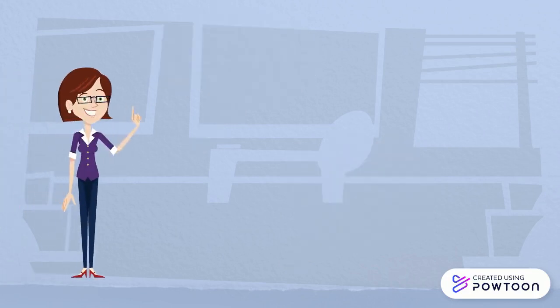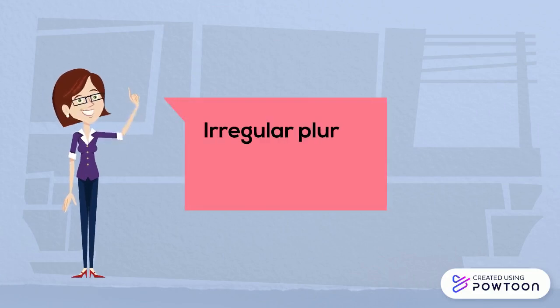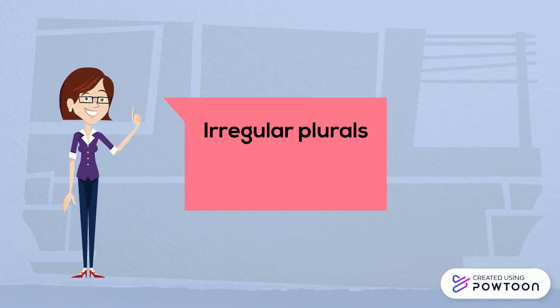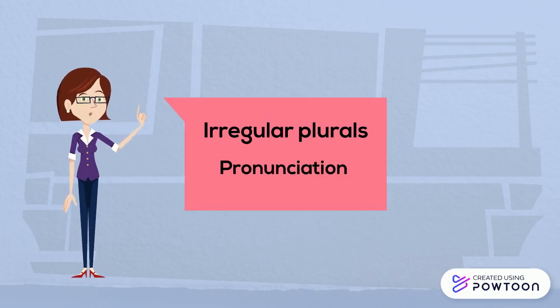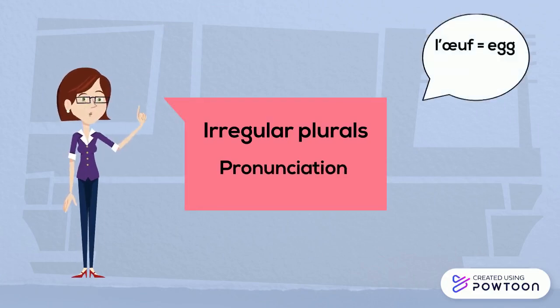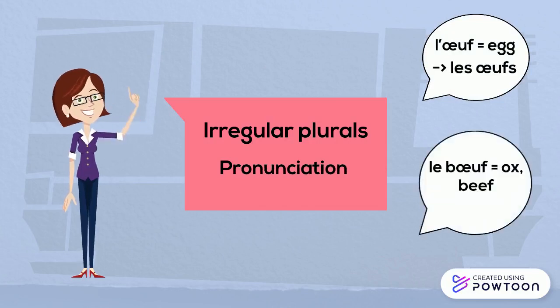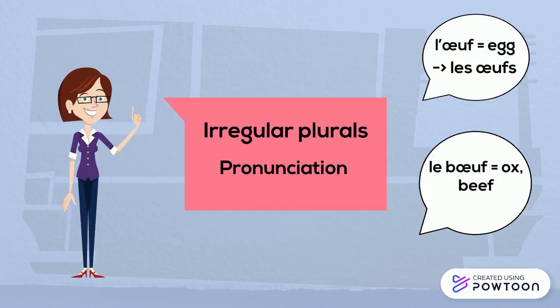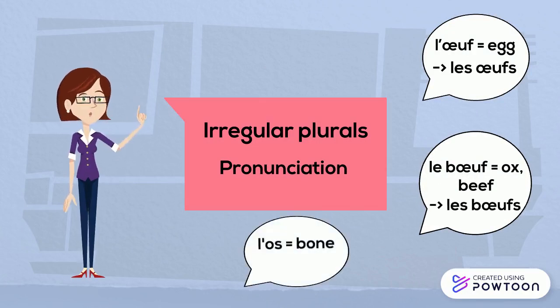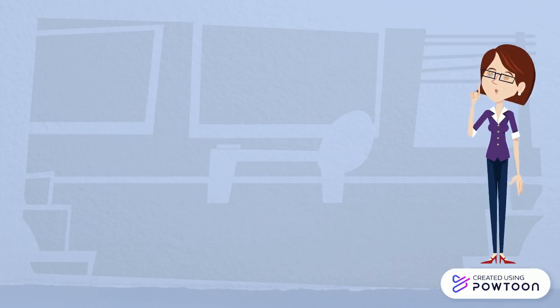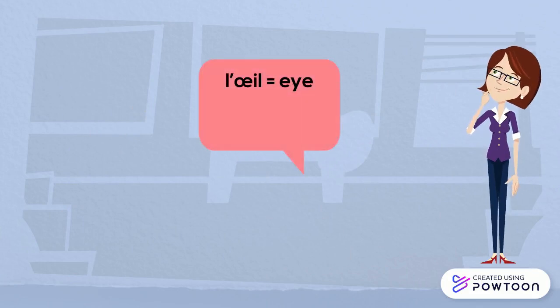There are also a few irregular plurals. For some of them, the irregularity comes from the pronunciation and not the spelling. We say 'l'œuf' (egg) but 'les œufs'; 'le bœuf' (ox or beef) → 'les bœufs'; 'l'os' (bone) → 'les os', where you don't pronounce the S. And the plural of 'l'œil' (eye) is 'les yeux'.